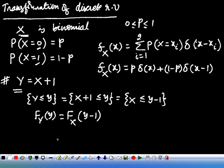Now differentiate with respect to y on both sides, and you will get the required answer. So f_Y of y equals f_X of y minus 1. But we already know that f_X of x is this.